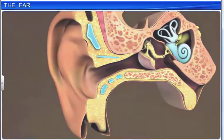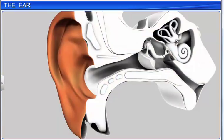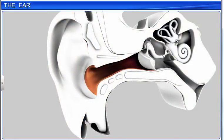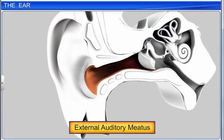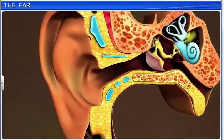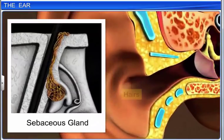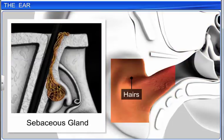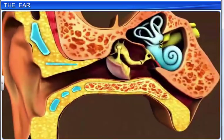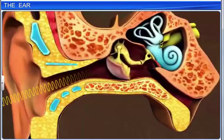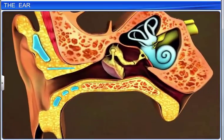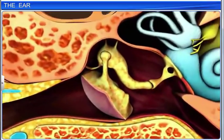The outer ear comprises a funnel-like structure called the pinna, and an S-shaped tube called the external auditory meatus. Very fine hairs and wax-secreting sebaceous glands are present on the skin of the pinna and the meatus, which prevent dust and small insects from entering the ear. The pinna is responsible for collecting vibrations in the air and directing sound into the meatus, which further extends into the middle ear.